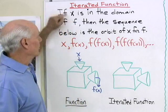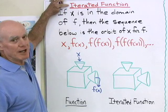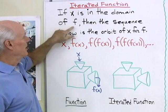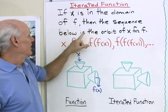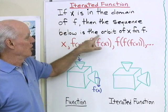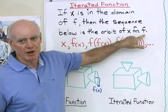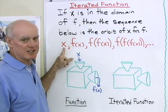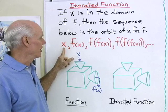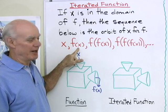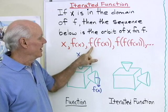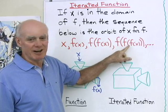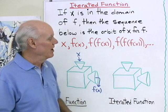Here's a definition for what's called an iterated function. If x is in the domain of some function f, then the sequence below is the orbit of x for f, and the sequence is very simple. It's just like this: x — that's the number we're starting with — then we find f of x, then f of f of x, f of f of f of x, so on and so forth.